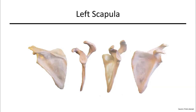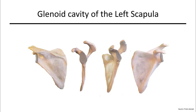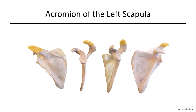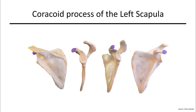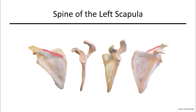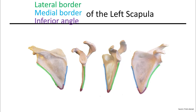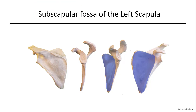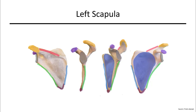Here are images of the left scapula. Pause and try to name the features from the last slide. We see the glenoid cavity, acromion, coracoid process, and spine of the left scapula, as well as the lateral border, medial border, inferior angle, and finally the subscapular fossa. These features are all color coded to match what you were to answer earlier.